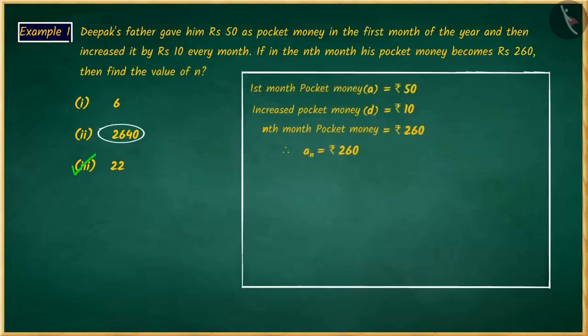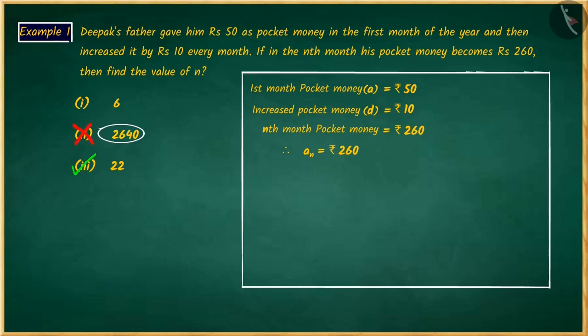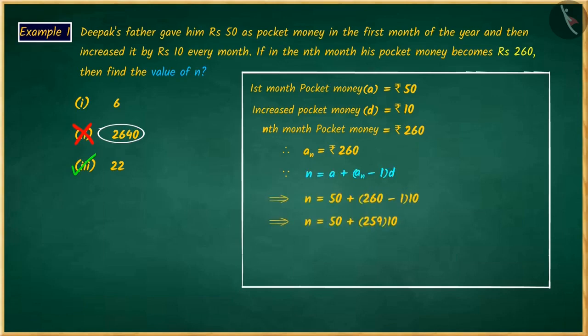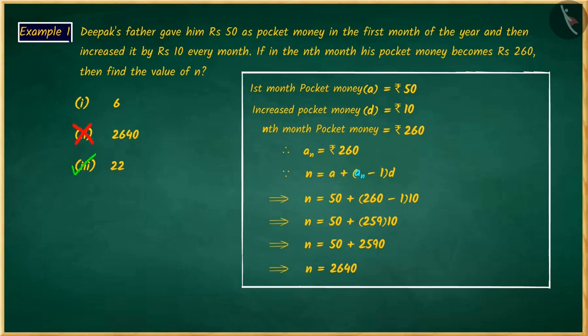If you chose the second option, it is a good attempt, but it is the wrong answer. This is because you interchanged the place of n and a_n in the formula for the general term while calculating the value of n, and substituted all values accordingly, which leads to a wrong answer. We must note that n represents the number of terms and a_n represents the value of the nth term.